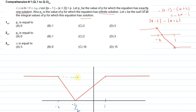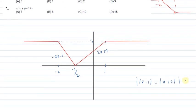This portion is -2x - 1 and this portion is 2x + 1. The value here is 3 on the right side. So this graph, finally, is set equal to p. The horizontal line y = p will intersect this piecewise graph to determine the number of solutions.